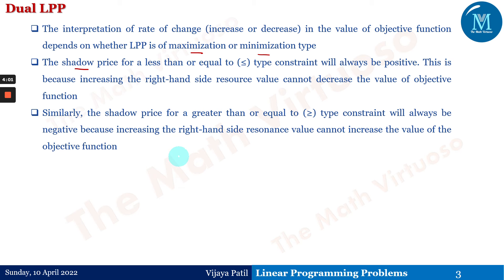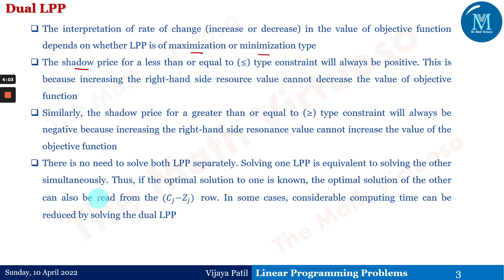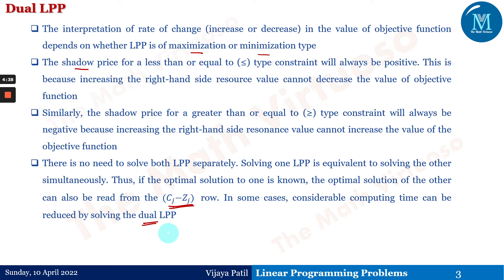This slide is included so you understand what exactly shadow price is and what exactly the dual is. There is no need to solve both LPPs separately — solving one LPP is equivalent to solving the other simultaneously. If the optimal solution for one is known, the optimal solution for the other can also be read from the Cj minus Zj rows. In some cases, considerable computing time can be reduced by solving the dual of the LPP, as a greater number of constraints or variables can be reduced.